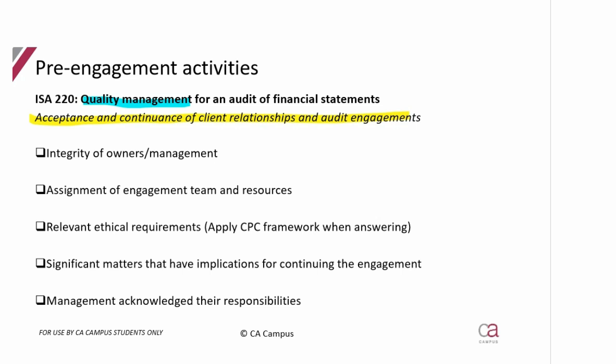As with ISQM1, there are many other requirements in ISA 220 that need to be adhered to for quality management of an entire audit, not just acceptance and continuance. In Cold Campus you'll see all the other principles highlighted too, such as monitoring audit performance and ensuring there is an engagement quality reviewer if required. We are currently in the pre-engagement stage, so acceptance and continuance is our focus.